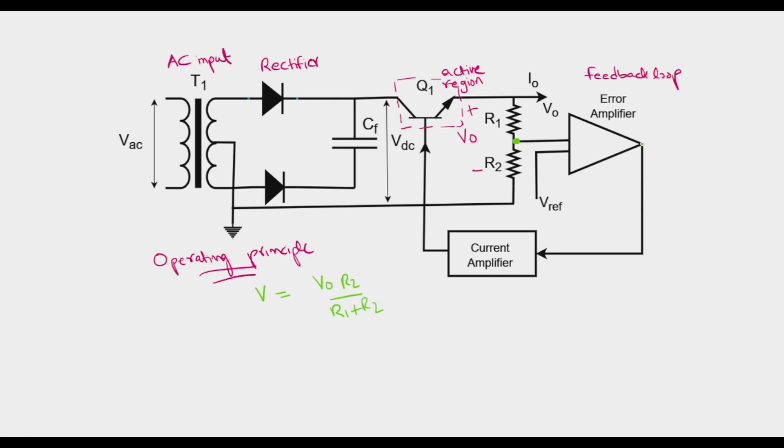The output of the error amplifier is this point here, let me call that E. This sensed voltage is compared with a reference signal Vref. The output of the error amplifier is Vref minus the voltage that is sensed, which is V0 times R2 over R1 plus R2.